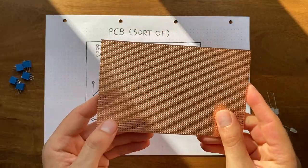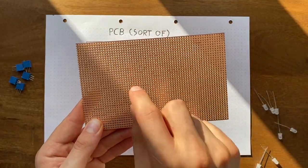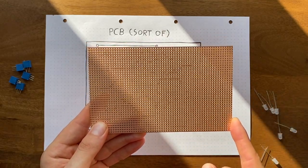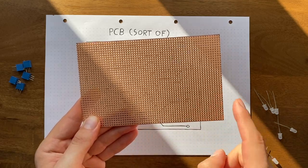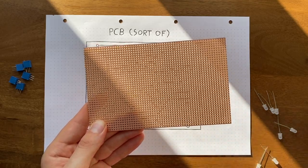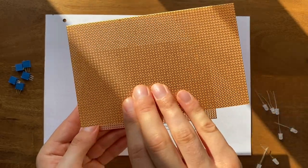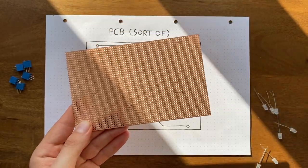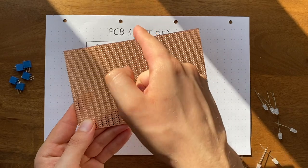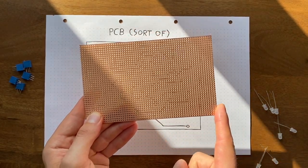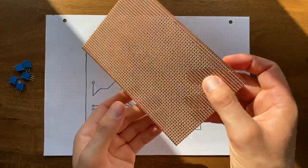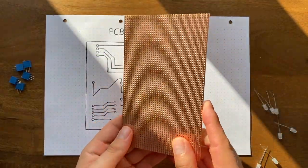Stripboard has these strips of copper on the back that each connect an entire row of holes together. This way, all leads soldered to the same row are making contact. No need to connect them manually like with the perfboard. On the other hand, you'll have to frequently break the copper strips to prevent contact between components that shouldn't connect to each other. But for me, that feels a lot less tedious.